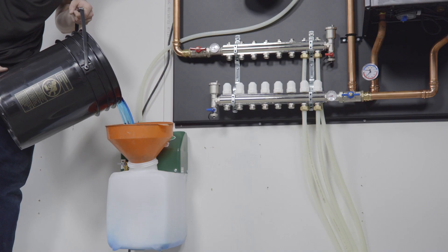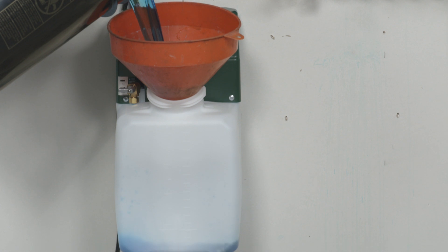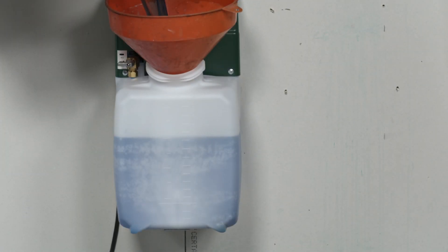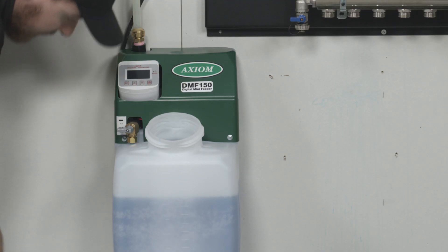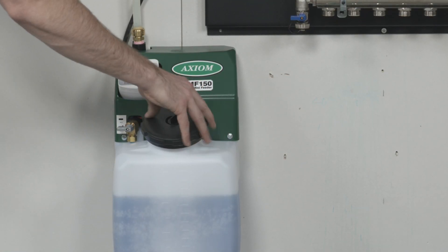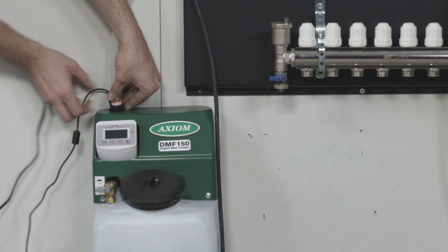With a funnel, fill the glycol feeding system with water and glycol. We recommend diluting the glycol to 50/50 or greater to fill the system, with a targeted end result of 30 to 35 percent glycol as the final fill. Plug the glycol feeder into an outlet.